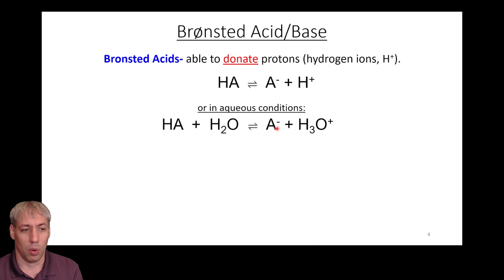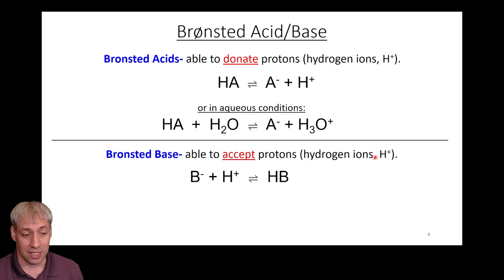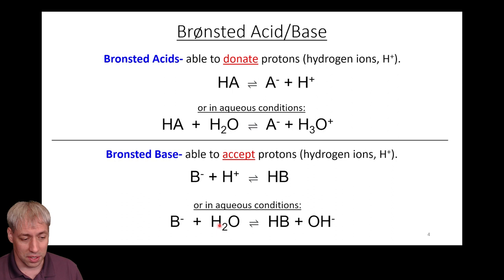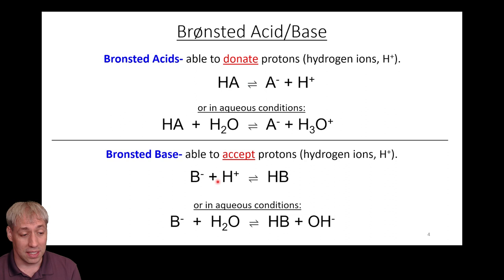In contrast, a Bronsted base is a species that's able to accept a proton — accept a hydrogen ion, or accept an H+. You have B- plus H+ giving you HB. In aqueous conditions, water is around, so the base takes H+ away from H2O or from H3O+, depending on the pH. Acids give up a proton; bases accept a proton to generate HB and OH- in aqueous solution.